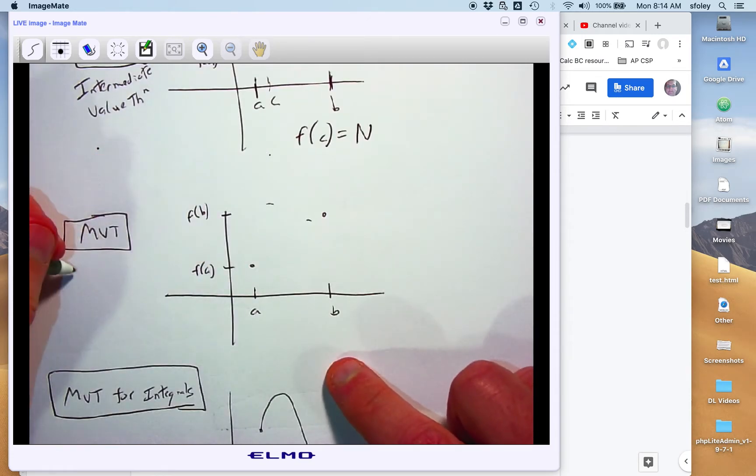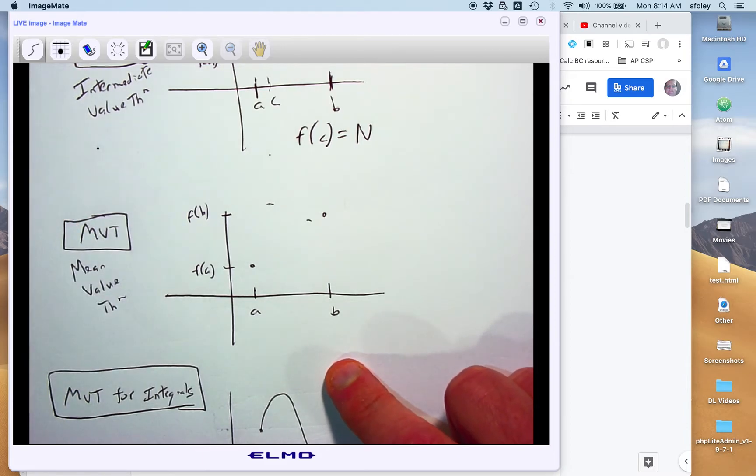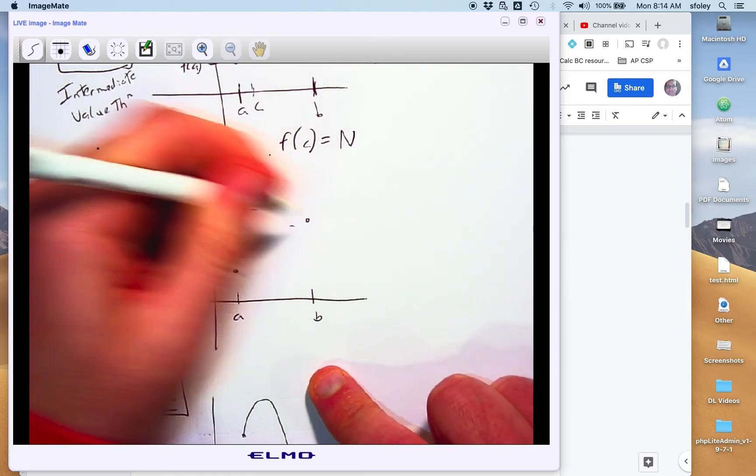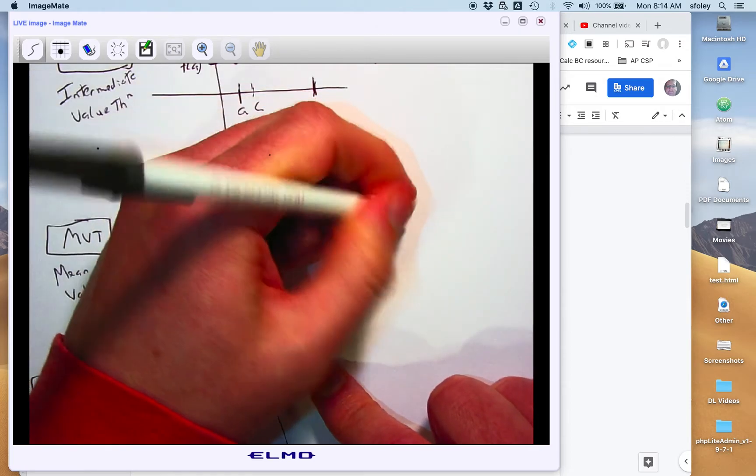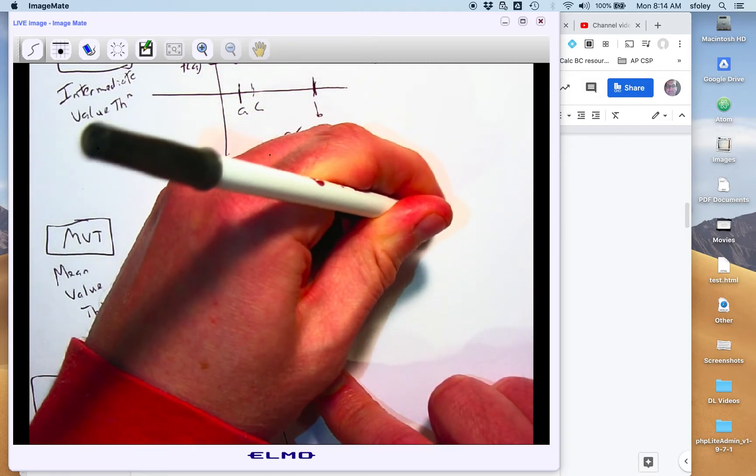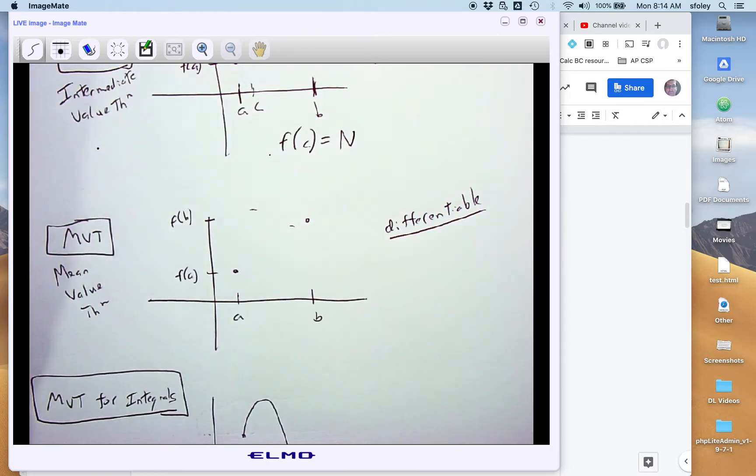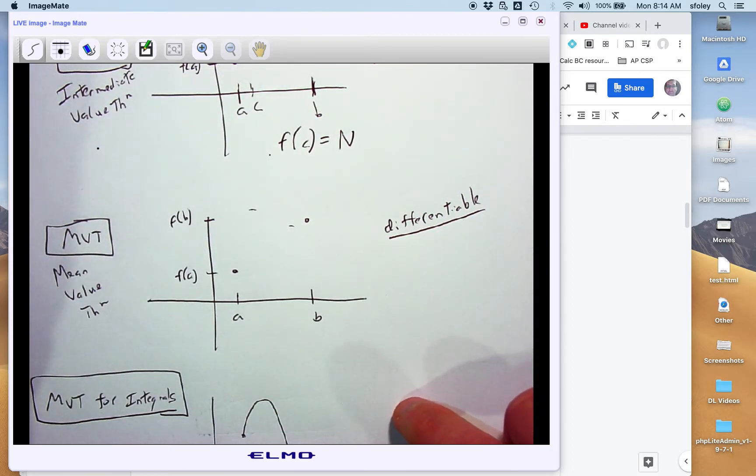The Mean Value Theorem, the MVT. Mean Value Theorem starts with the same picture. We've got a function. We've got the endpoints. This function needs to be differentiable this time, so not only does it need to be continuous all in one piece, but it needs to be smooth, no cusps or sharp corners.